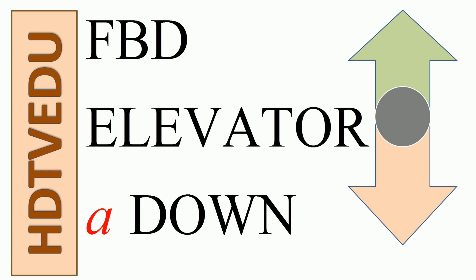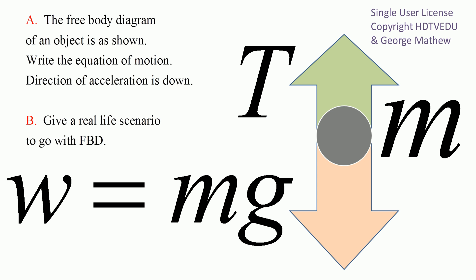Free body diagram: elevator accelerating down. The free body diagram of an object is as shown. The direction of acceleration is down — we have the bigger vector pointing down and the smaller vector pointing up. The one pointing up is the tension, and the one pointing down is the gravitational force.